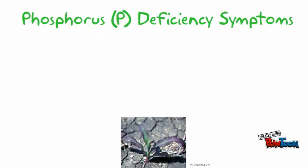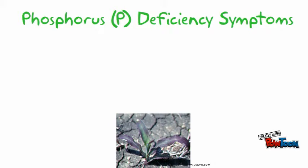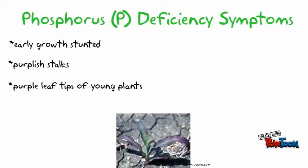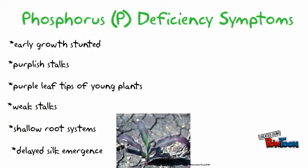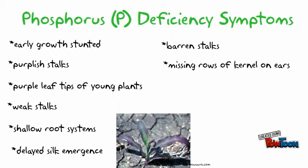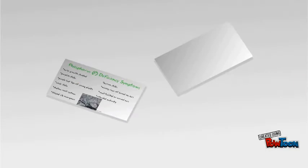Phosphorus deficiency symptoms include stunting during early growth, purple stalks, purple leaf tips of young plants, weak stalks, shallow root systems, delayed silk emergence, barren stalks, missing rows of kernel on ears, small twisted or curved ears, and retarded maturity.